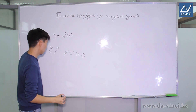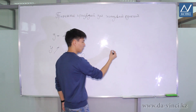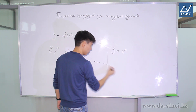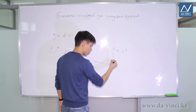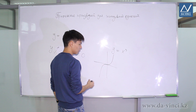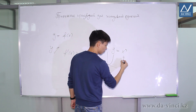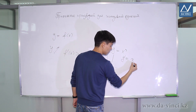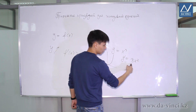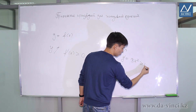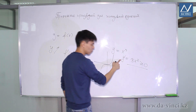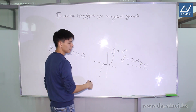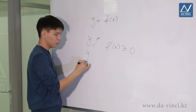Let's demonstrate this with an example. We know that the function y = x³ is increasing — its graph roughly looks like this. Now let's find its derivative: y' = 3x². Since this is 3x², we can say that it is greater than or equal to 0. The derivative is greater than or equal to 0, so the function increases accordingly.